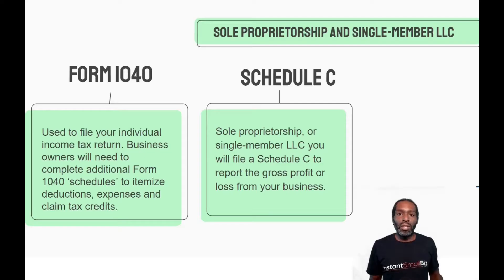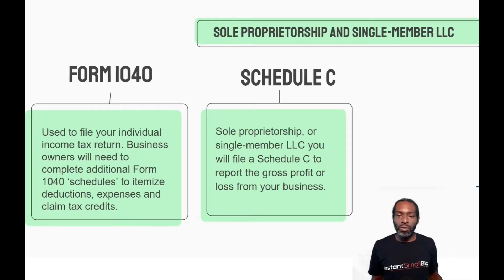Schedule C covers the gross profit and loss from whatever business you're running, whether you're a sole proprietor or you filed for LLC as the sole member.